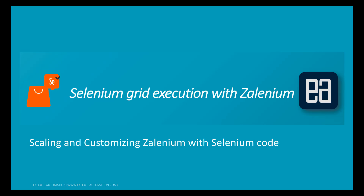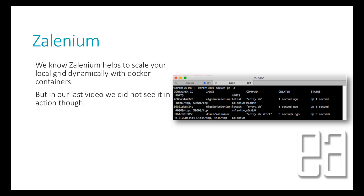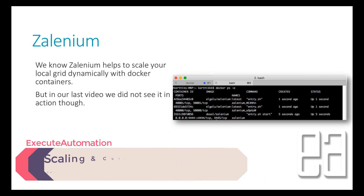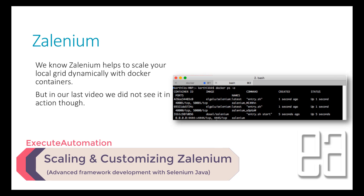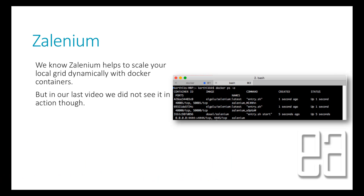In our last video we discussed how we can execute code with Selenium and we saw how we can run a very simple test with Selenium - how the grid automatically pops up by creating node and hub configuration for us. But we did not see how we can scale our local grid dynamically with Docker containers, which is one of the major advantages of Selenium compared to the actual hub and node configuration in Selenium Grid.